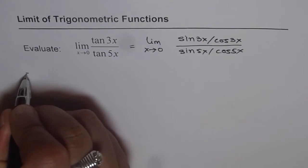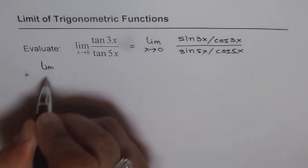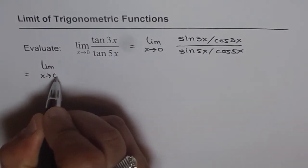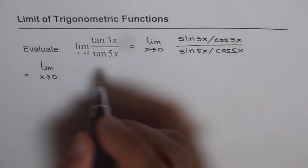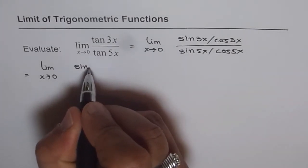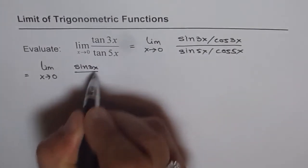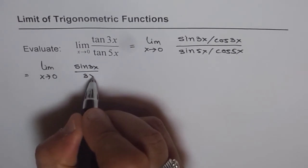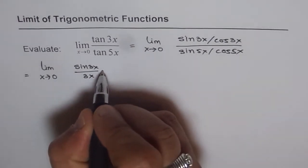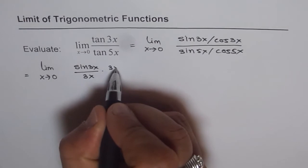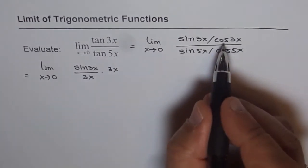So we can write this as equal to limit of x approaching 0 for the function sin 3x over 3x. And we multiply and divide by 3x, so we get 3x over 3x. Then this is cos 3x.